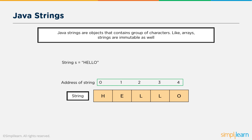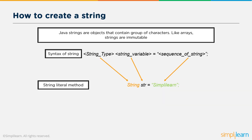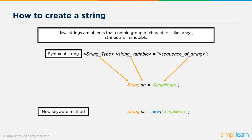Now let's move on to creating strings. There are two methods of creating a string: the string literal method and using the new operator. The syntax is: string type, then variable name, equals, sequence of characters in double quotes — this is the string literal method. For the new operator method, we use the new operator and the value of the string is given in the brackets.